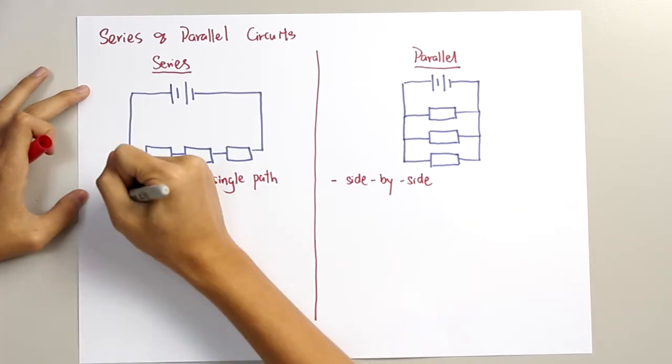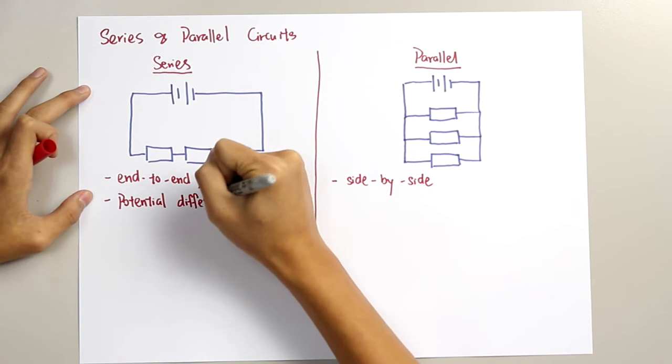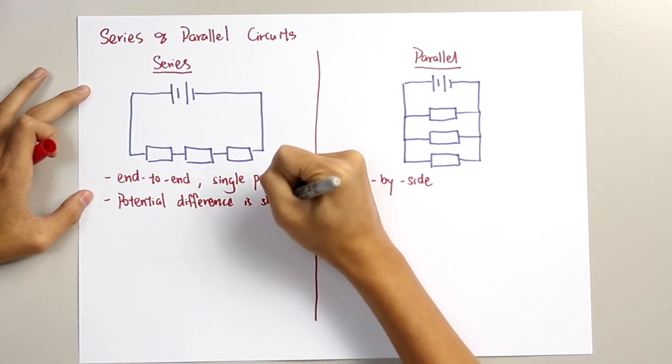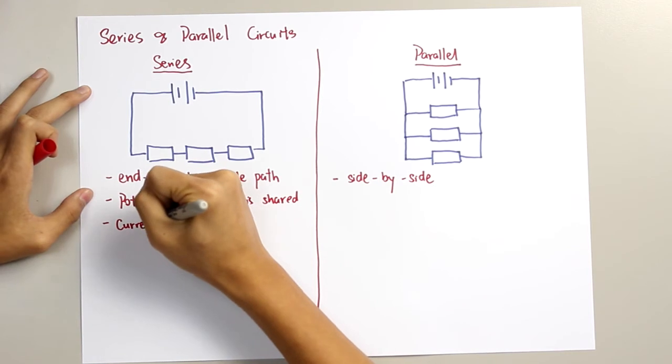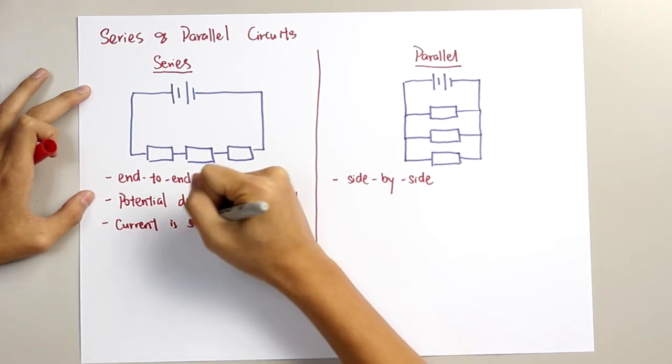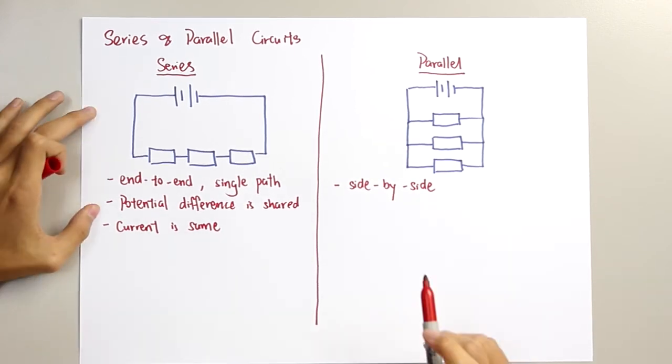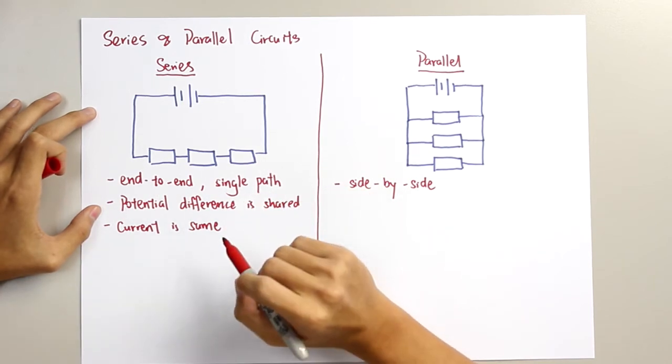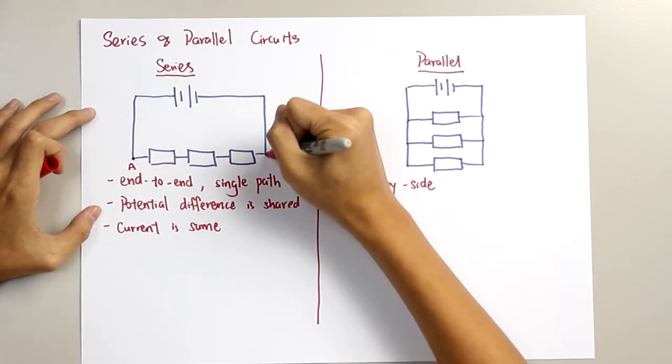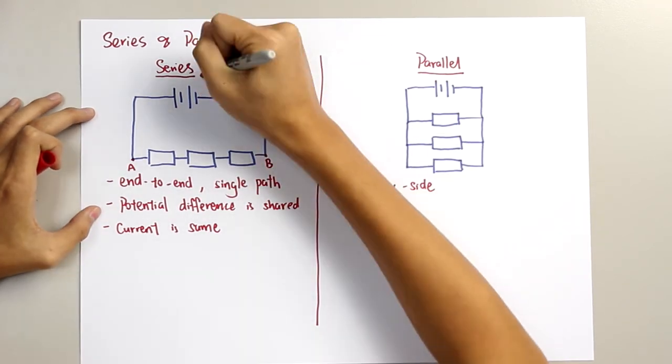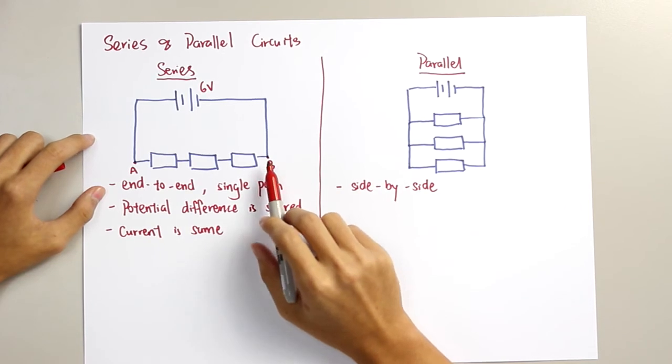For series, the potential difference is shared, whereas the current is the same. Now, if you remember the definition for potential difference, it states that it's the work done to move a unit charge from a point to the other. So, when there's a point A here and point B here, we assume the power supply here provides a 6V. Therefore, it creates a 6V of potential difference across the A and B point.